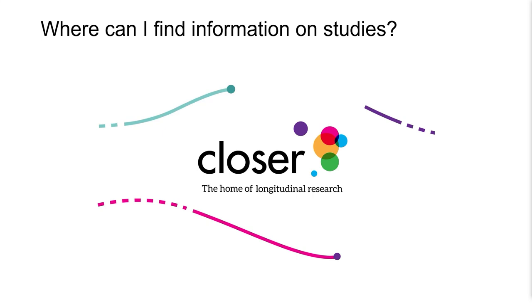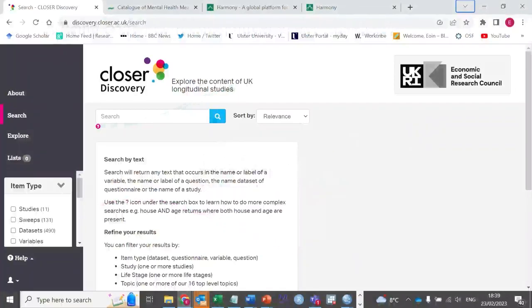However, when we want to explore the data that are out there, we are faced with two issues. First, we need to find out what studies are out there and have the necessary data to answer our research question. Second, once we've identified the studies that can do this, we need to find out what specific variables are available in these studies, when they were measured and how they were operationalised. Each individual study has a website, often with detailed cohort profiles and technical manuals; however, routing through these can be a time-consuming and imprecise process. Thankfully, a number of organisations and initiatives exist to help with data discoverability — making it easy for researchers to find out what studies are out there and what information is gathered in each study.